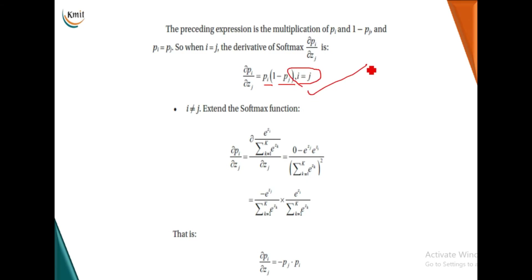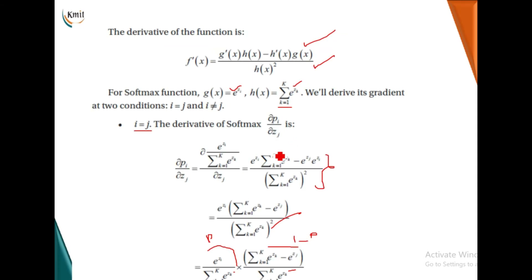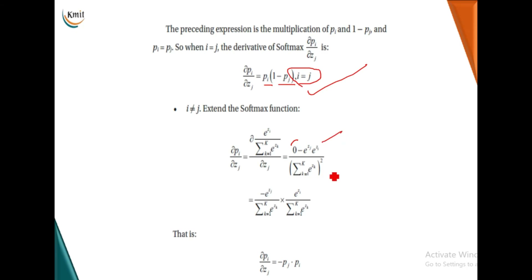For the second condition when i is not equal to j, the partial differentiation gives g'(x) as 0. The remaining terms are split into e to the power z_j and e to the power z_i separately, yielding minus p(j) times p(i). So we have two separate derivative forms: p(i)(1 − p(j)) when i equals j, and minus p(i)·p(j) when i does not equal j. These will be used when calculating the derivative of the cross entropy loss function.